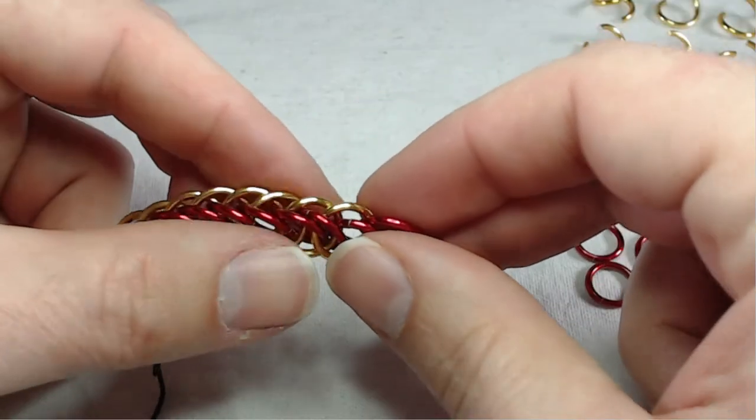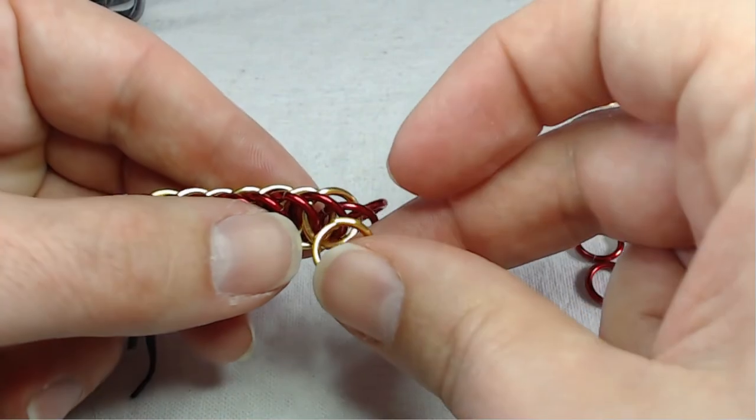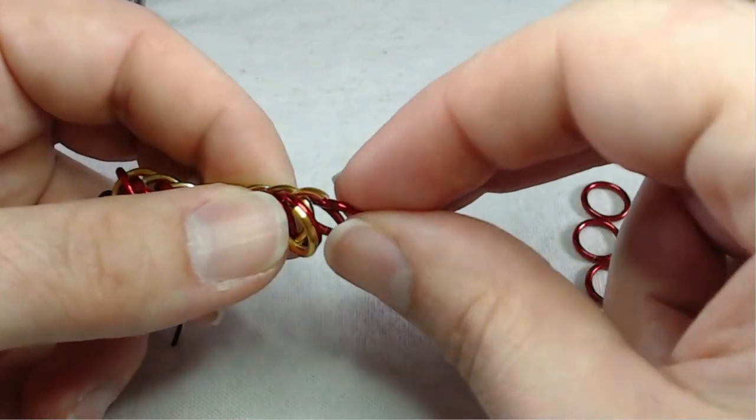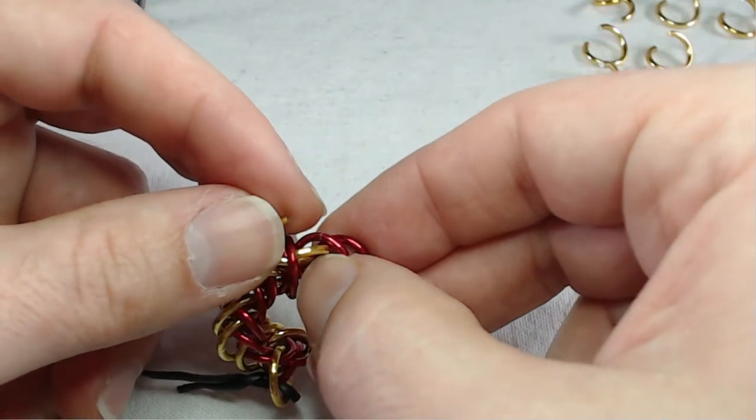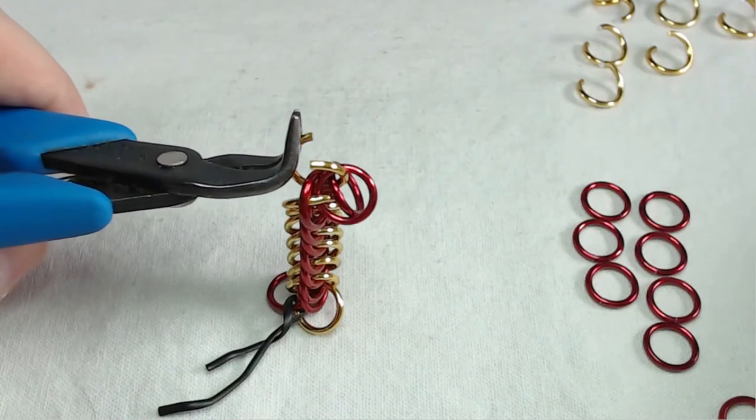Now the rings I'm using are anodized aluminum, but you can use any metal you want. I'm also using 16 gauge, five sixteenths rings. You can use a variety of different gauges and sizes. You just want to maintain that same aspect ratio.